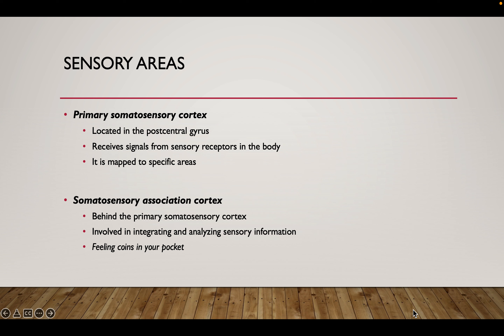We have our primary somatosensory cortex, and this is going to be located in the post-central gyrus — that gyrus just behind our central sulcus. This is going to be receiving sensory information detected by sensory receptors in the body and bringing it into the central nervous system, into the brain. It's mapped to a specific area, just like our primary motor cortex was.